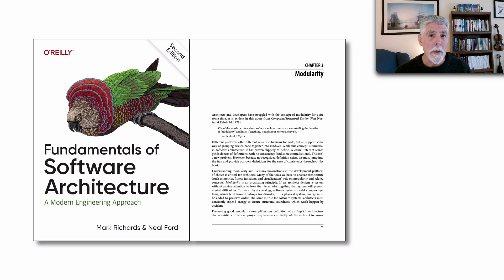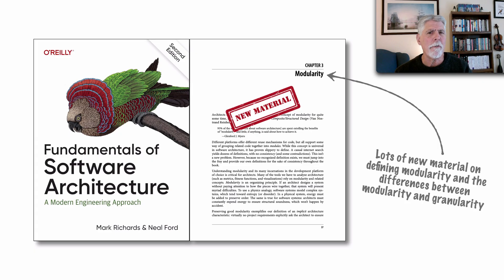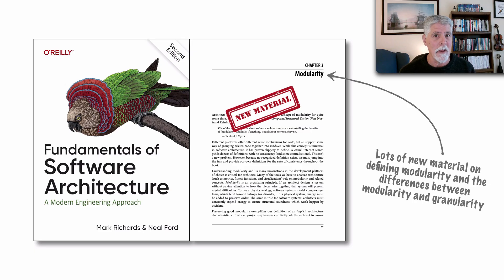Moving to chapter 3, modularity — an existing chapter from our first edition — we significantly modified this chapter and added a lot of new material about better defining what we mean by modularity within architecture, and also the key differences between modularity and granularity and how they play into different architectural styles.